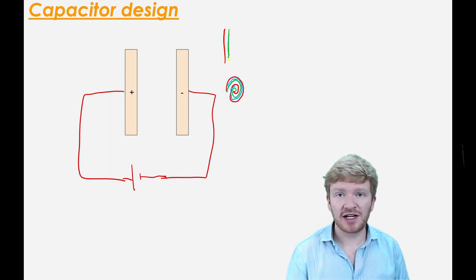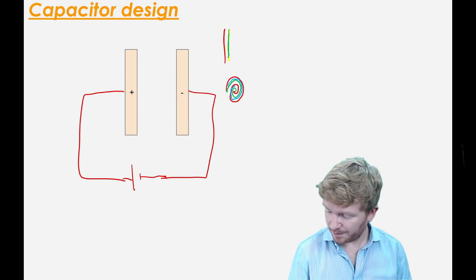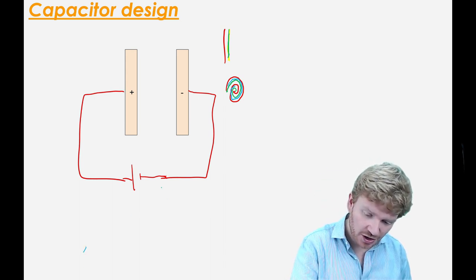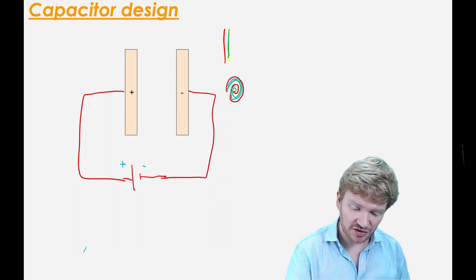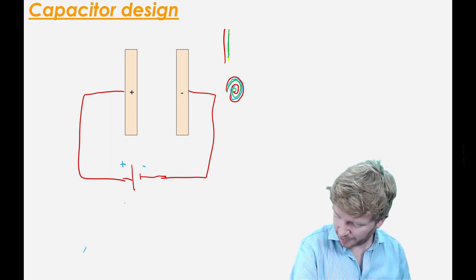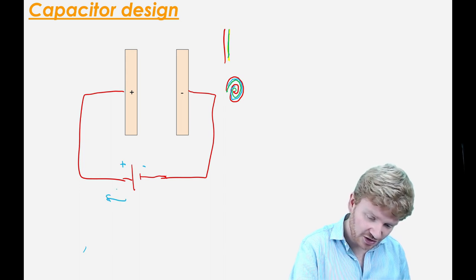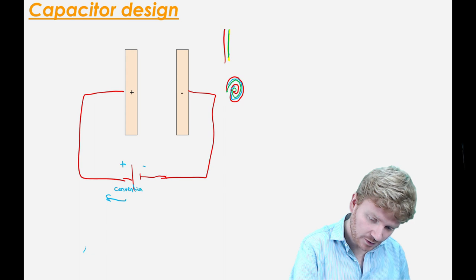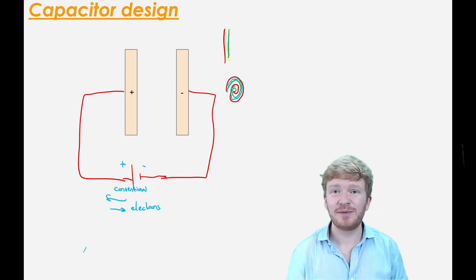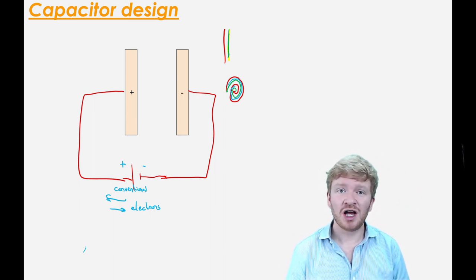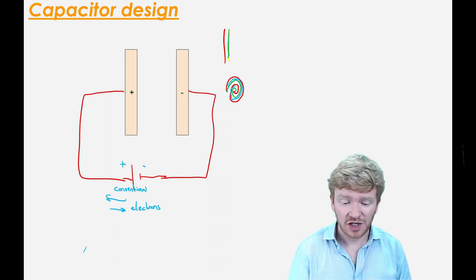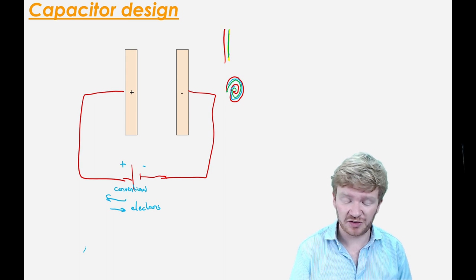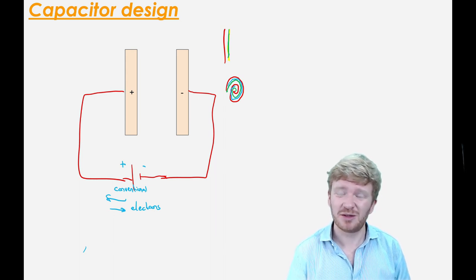If you think about what we know so far, this is going to create an electric field between these two plates. When I first switch on my power supply — remember the long end of a battery symbol is the positive end, the short end is the negative end — conventional current goes from positive to negative, while the actual electrons go from negative to positive. This is where it gets a little bit complicated with capacitors: electrons always go from negative to positive, while current we define as going from positive to negative.